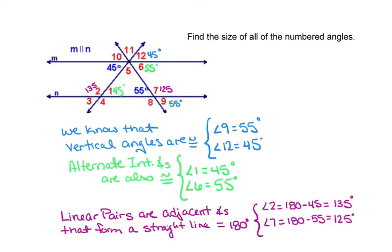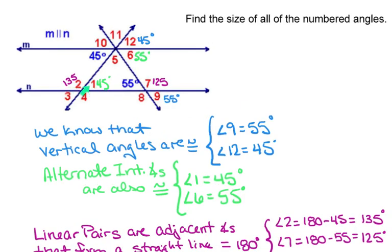So that's all the alternate interior angles I have at the moment. So let's look next at the linear pairs we have. Remember, a linear pair is when they make a straight line.